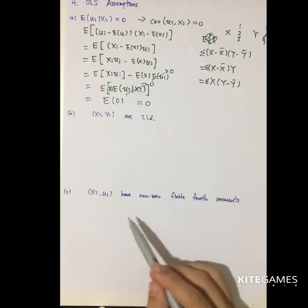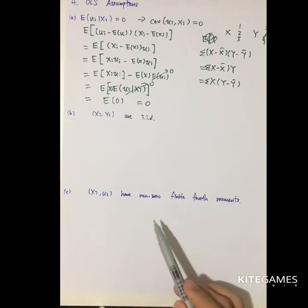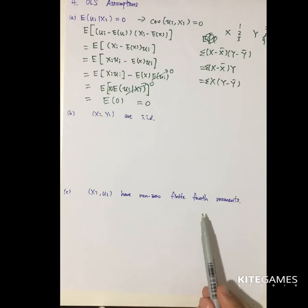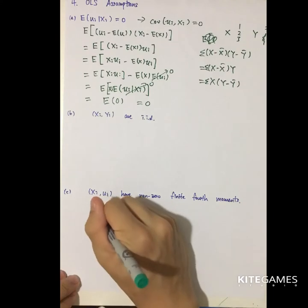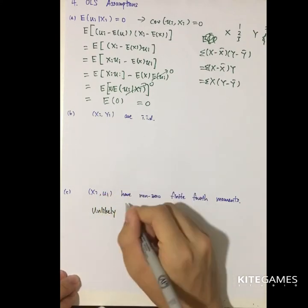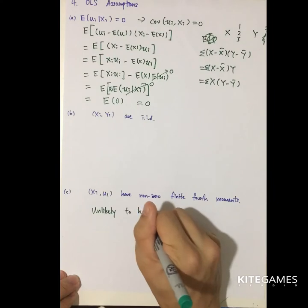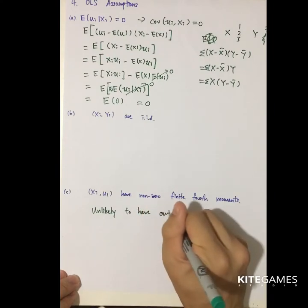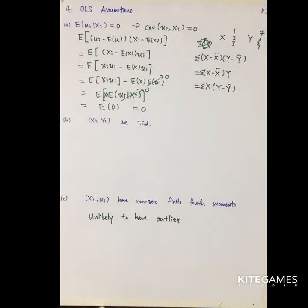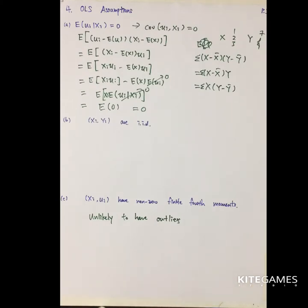The third assumption is that x_i and u_i have non-zero finite fourth moments, meaning outliers are not likely. The existence of outliers will affect the predicted values, so we assume that outliers are unlikely. This ensures the expected value of y is consistent.